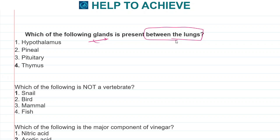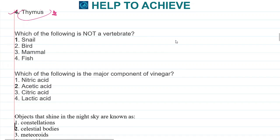Which of the following glands is present between the lungs? Glands are very important as they release hormones. Hypothalamus, pineal, and pituitary are near the brain, so these are not the right answer. The correct answer is the thymus gland, which is present between the lungs.